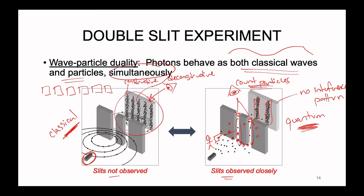If we could design an experiment that tracked both the classical and the quantum, we would be able to see both behaviors simultaneously at once. We currently don't have that technology to do both at once, so light almost has to be forced into this binary behavior just because of how we're looking at it.